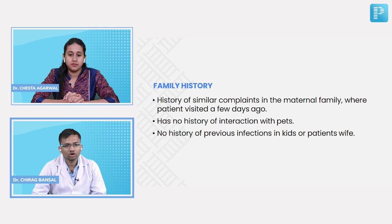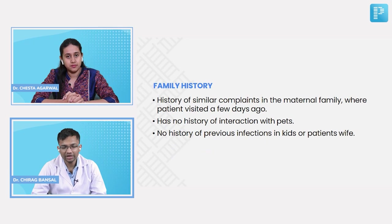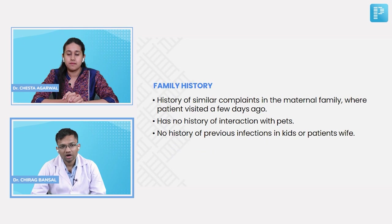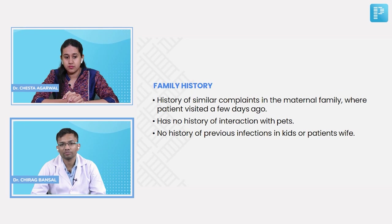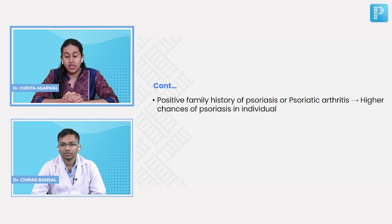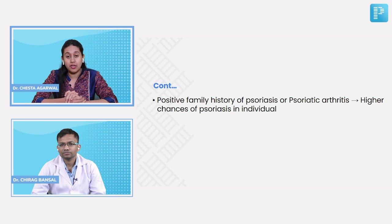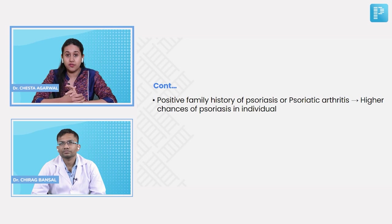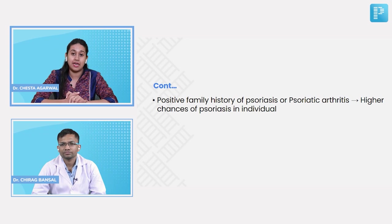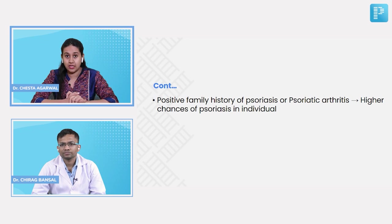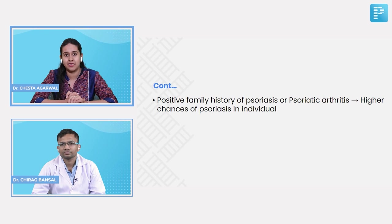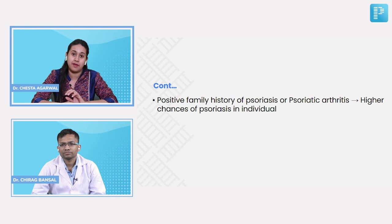There is a history of similar complaints in the maternal family. In psoriasis, positive family history is one of the diagnostic criteria. If you have a positive family history of similar complaints — either cutaneous lesions of psoriasis or psoriatic arthritis — please note it, as these individuals have a higher risk of severe complicated psoriasis. This patient has a positive family history.